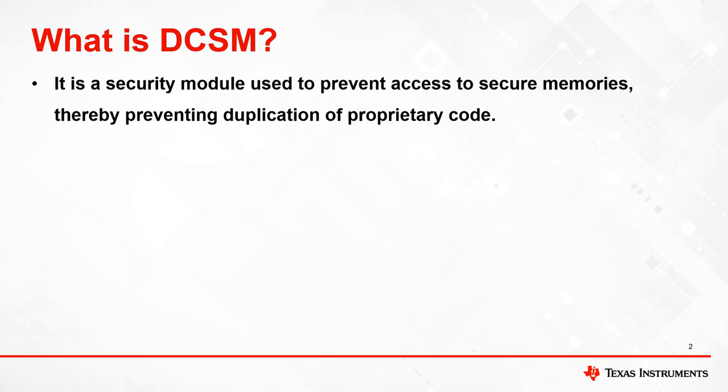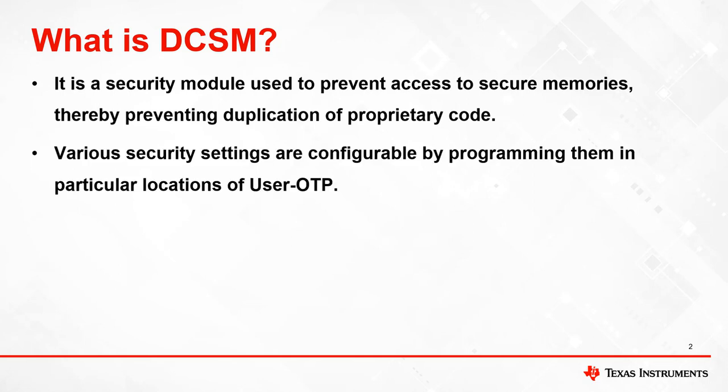The Dual Code Security Module is a security feature implemented on C2000 devices. Its primary purpose is to prevent unauthorized read or write access to proprietary code once a device has been programmed for production. Security settings are configured by programming specified memory locations in user OTP, or one-time programmable memory.